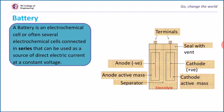A separator, as the name indicates, is a physical barrier which separates the anode compartment and cathode compartment. Usually it is a polymeric membrane which prevents the mixing of products formed at the anode and cathode. This separator is permeable for electrolytes in order to maintain ionic conductivity. In addition to this, terminals, seal, current collectors, anode and cathode make a cell complete.